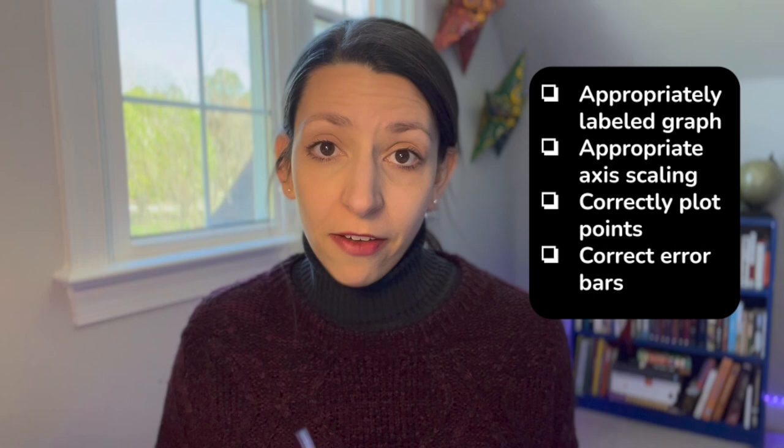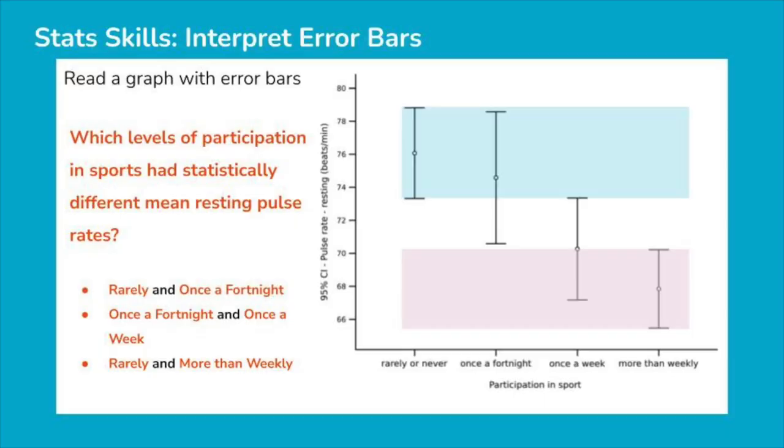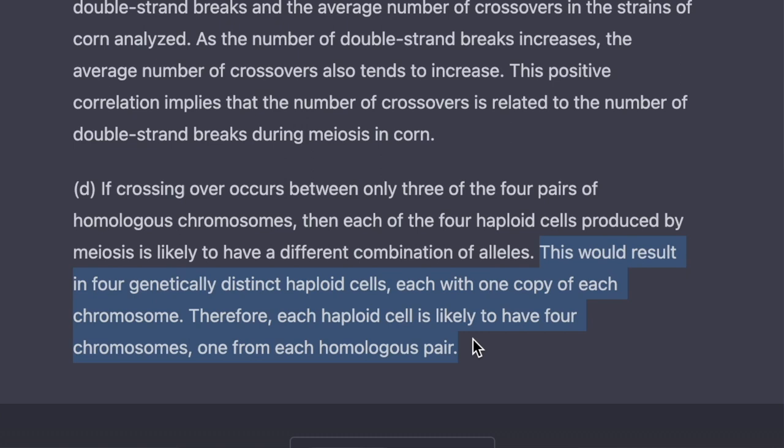In order to get all the points for a graph on an FRQ, you need to make sure you have appropriate axis scaling, correctly plot the points on the right type of graph, correct error bars if they're necessary — and usually they are — and then look at whether there's a statistical difference in particular data points, usually by checking if there's crossover between error bars. I have some videos on that if you need help learning how to graph or use error bars. ChatGPT did get the fact that there was a positive correlation between the number of double strand breaks and the average number of crossovers, but its prediction was really wrong — that one was really challenging for students too — and its explanation was off as well. So those were the two long FRQs.